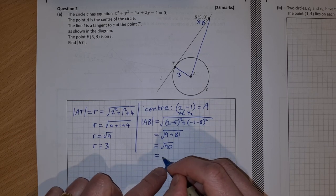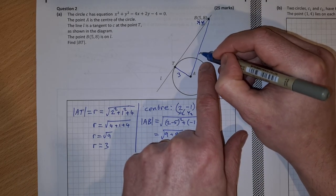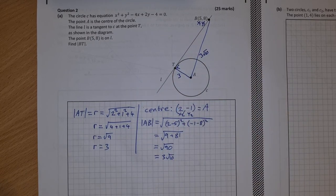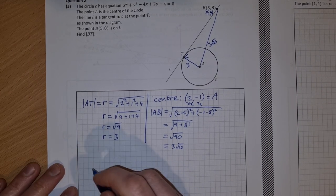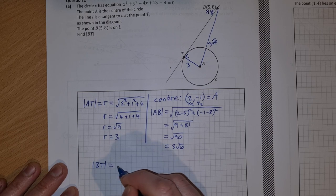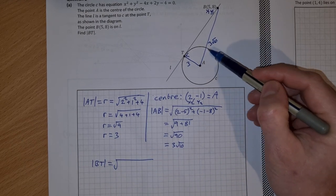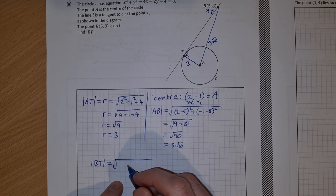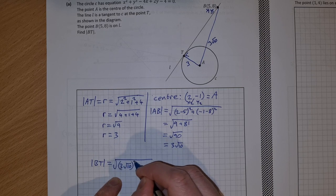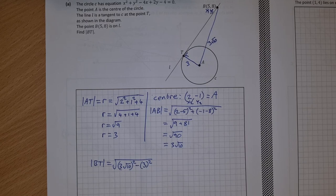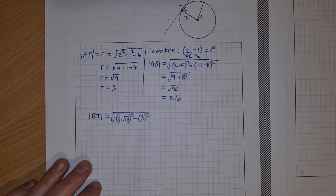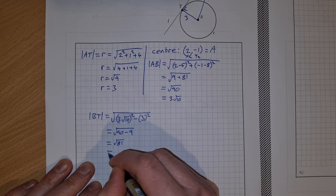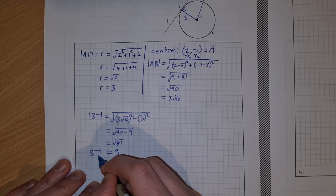√90 simplifies to 3√10, so AB = 3√10. Now we're looking for the distance BT. Since BT is one side of a right-angle triangle, using Pythagoras: BT = √(AB² - AT²) = √((3√10)² - 3²) = √(90 - 9) = √81 = 9. So the length BT is equal to 9.